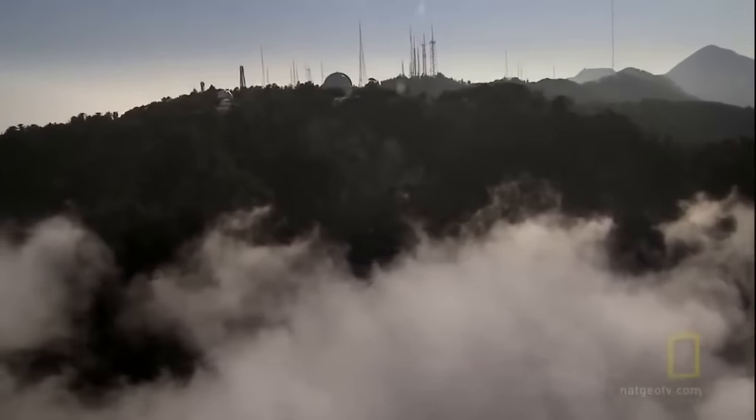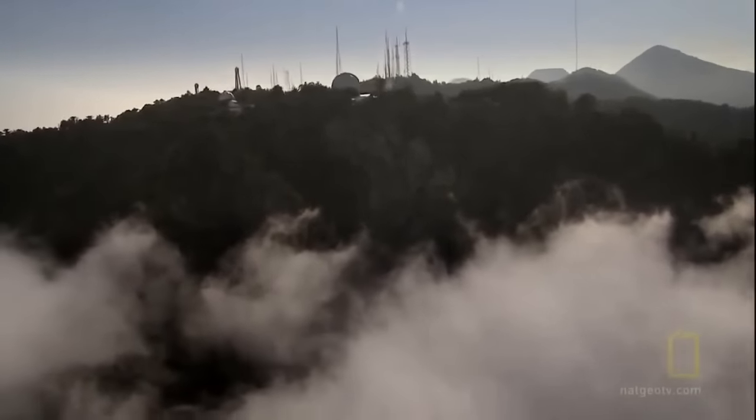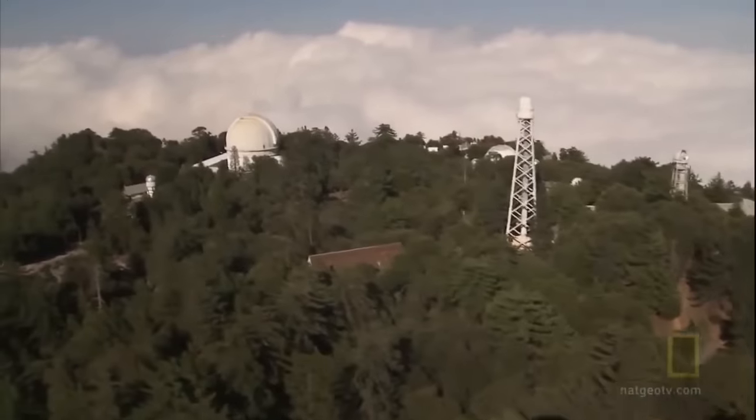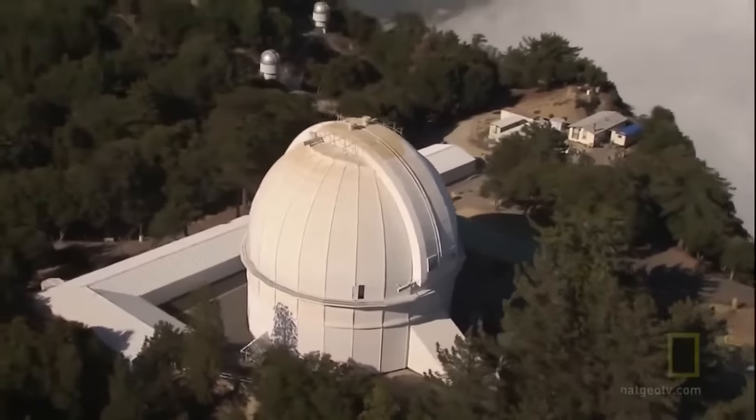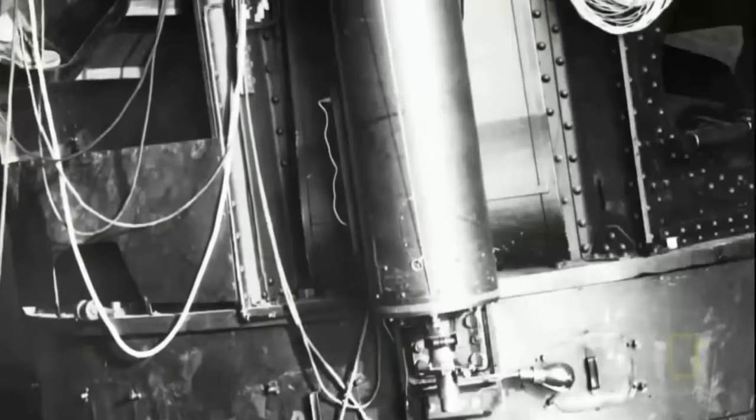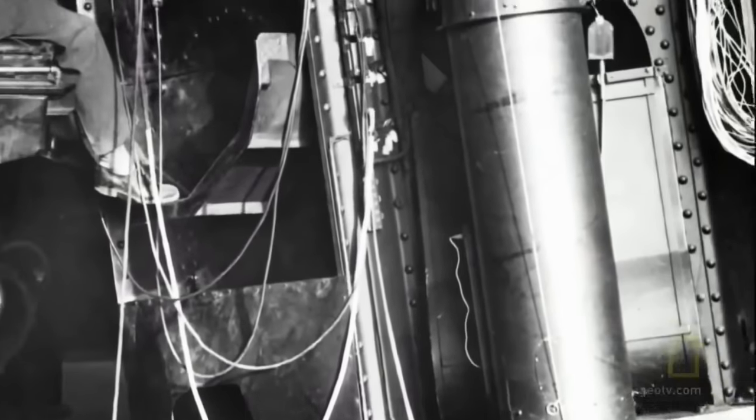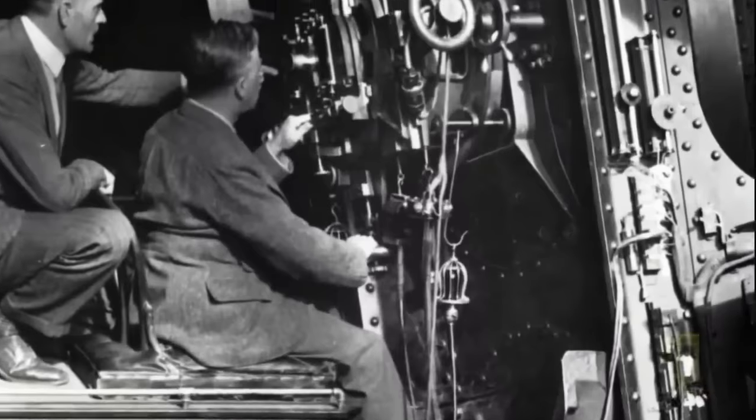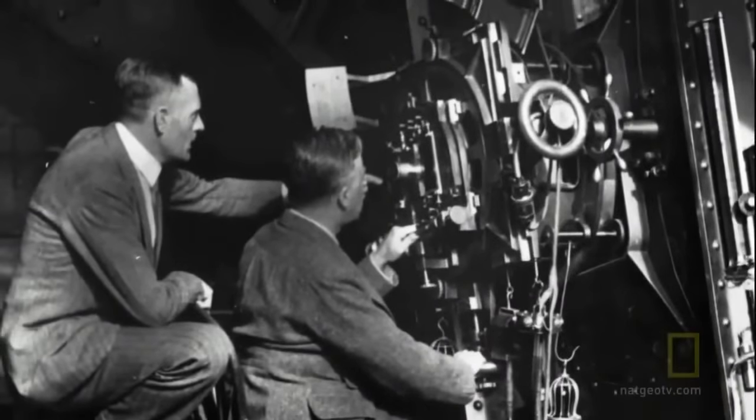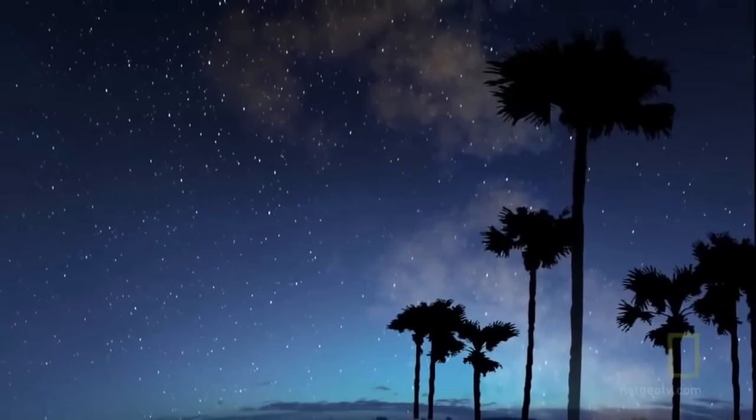To understand how it all could end, scientists turned to how it began. The mystery starts to be solved here at the Mount Wilson Observatory overlooking Pasadena, California. In 1929, while looking through what was then the world's largest telescope, Edwin Hubble makes a strange discovery. The universe is expanding. Hubble's discovery led to a whole new picture of the universe, that it was a dynamic environment and that it evolved.